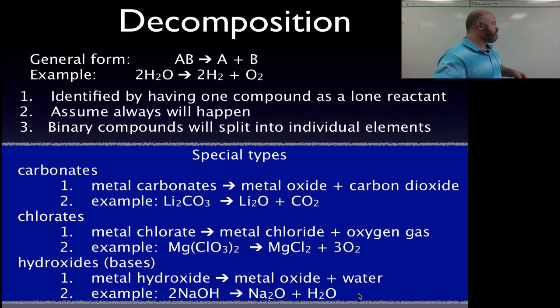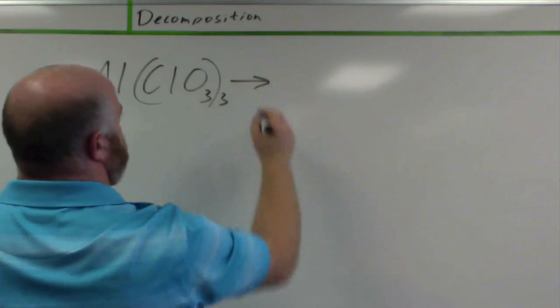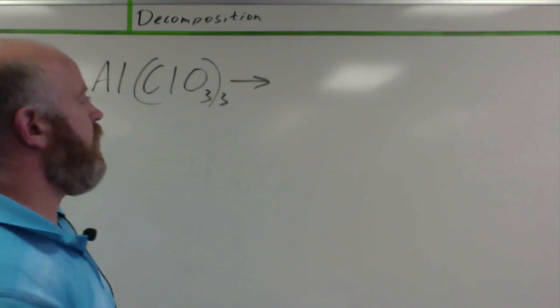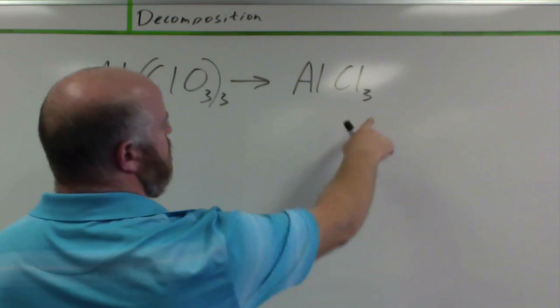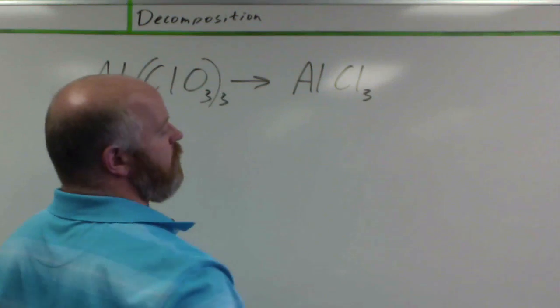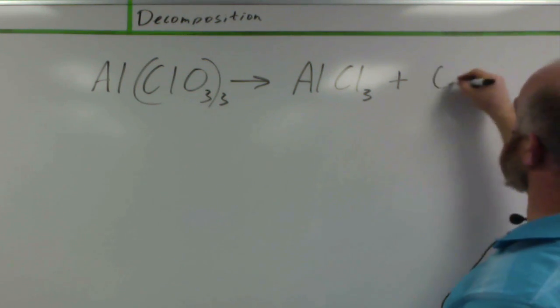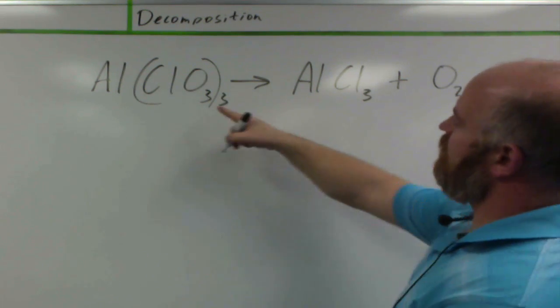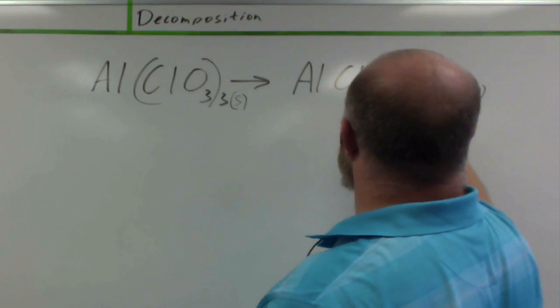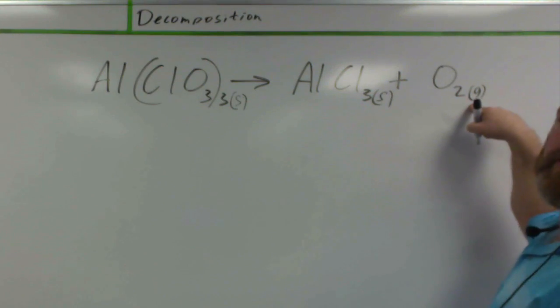So let's take a look at another example. If I had aluminum chlorate, it would have to break down, and since it's a chlorate, we're going to make a metal chloride. So I'm going to make aluminum chloride. Again, the three is needed because my three plus and my one minus charge. Plus, because I have a chlorate, I release oxygen gas from that. So it always releases its oxygen gas. There's aluminum chloride. If this was a solid, this would be a solid also, because you have an ionic compound that's just breaking apart, so it would stay a solid, the gas would just release.